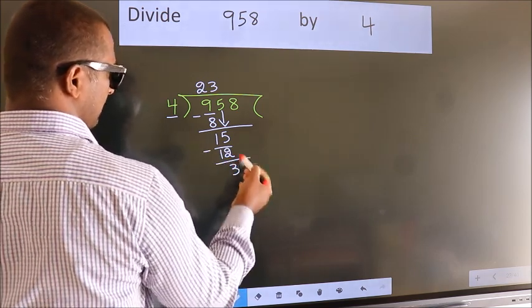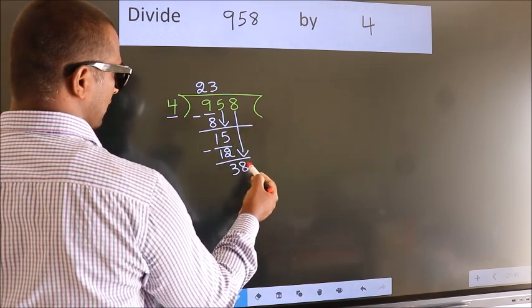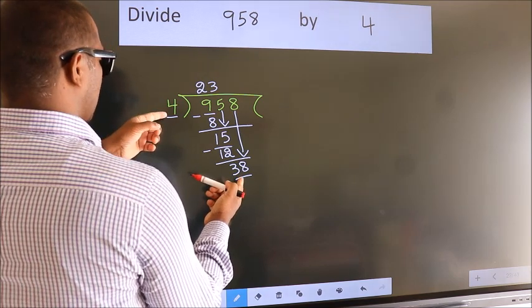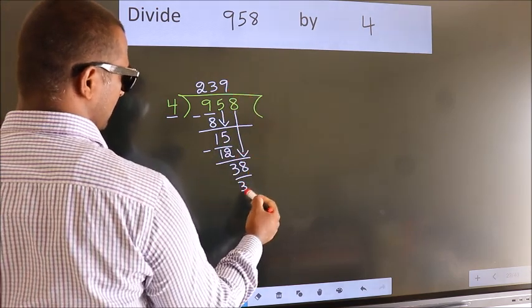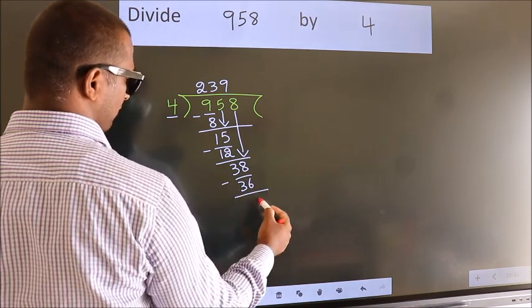After this bring down the beside number. So 8 down. So 38. A number close to 38 in 4 table is 4 nines, 36. Now we subtract. We get 2.